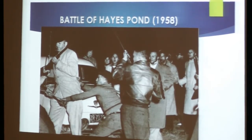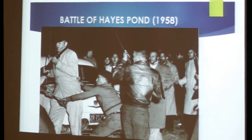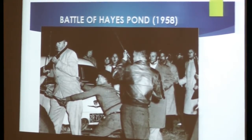At the Battle of Hayes Pond in 1958, it took place in — I believe the town of Maxton, North Carolina, Robeson County. This was known as the clash of the Lumbee War. What ended up taking place was the Ku Klux Klan wanted to do a rally — they actually attempted to do a rally in this particular area, which was of course where the Lumbee people resided.